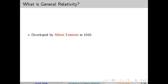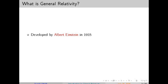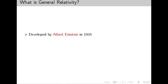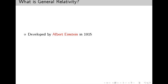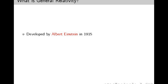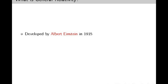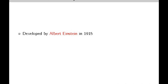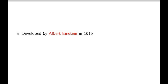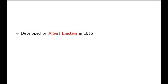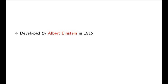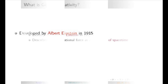Enter Albert Einstein. In 1905, he published his theory of special relativity, which introduced the idea that the laws of physics are the same for all non-accelerating observers and that the speed of light is constant, no matter the observer's motion. This was a stepping stone towards his more comprehensive theory, general relativity. In 1915, after 10 years of intense work and deep thinking, Einstein presented his theory of general relativity, proposing that massive objects like the sun curve the space-time around them, and this curvature is what we perceive as gravity.